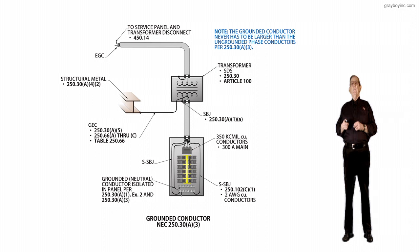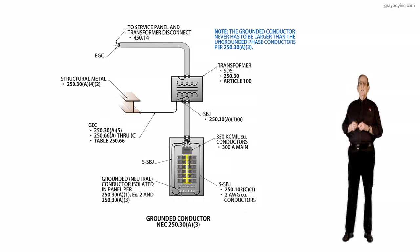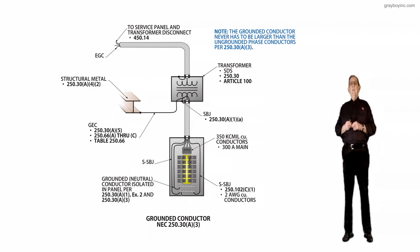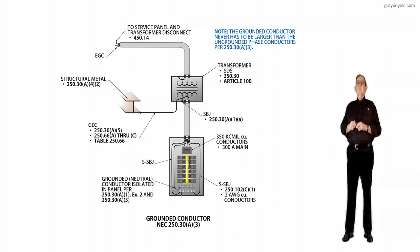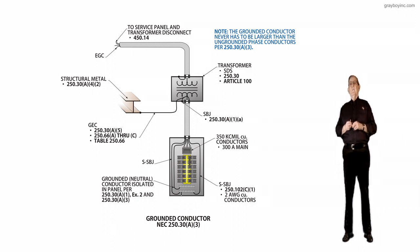Notice at the top of the illustration, on the primary side of the transformer, you have your service panel and transformer disconnect up ahead of it there, in accordance with 250.14 to place that disconnect where that section calls for it. And then we have an equipment ground, so we'd have redundant grounding there.